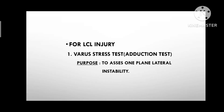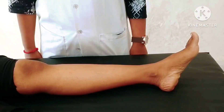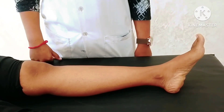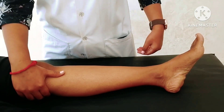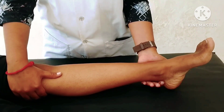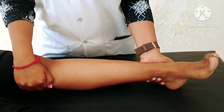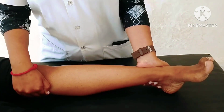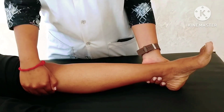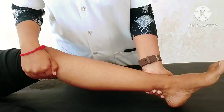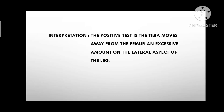For LCL Injury: Varus Stress Test / Adduction Test. Purpose: to assess one plane lateral instability. Patient Position: supine lying with the knee in full extension. Therapist Position: standing with one hand over the medial knee joint line and the other hand stabilizing the ankle in slight medial rotation. The examiner applies a varus stress at the knee, pushing the knee laterally. Consequently, perform these tests with knee at 20-30 degrees flexion. Interpretation: the test is positive if the tibia moves away from the femur an excessive amount on the lateral aspect.